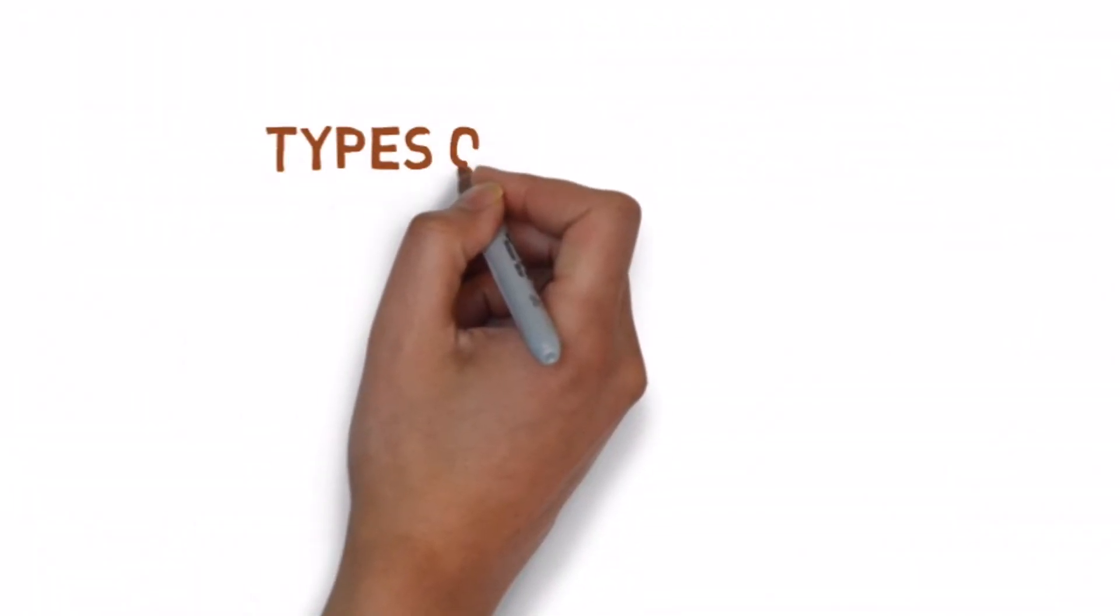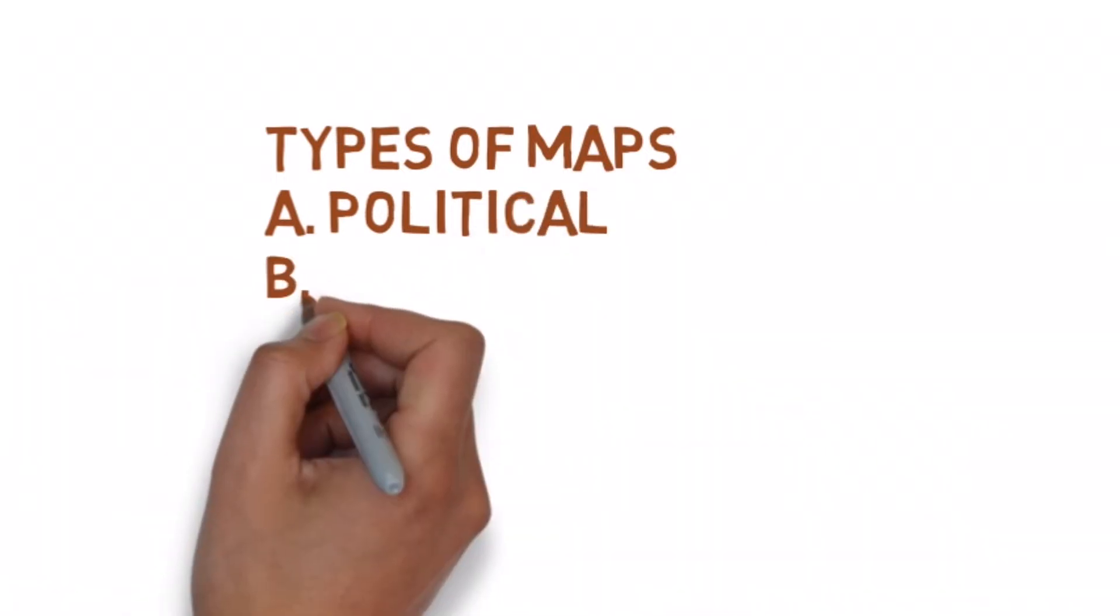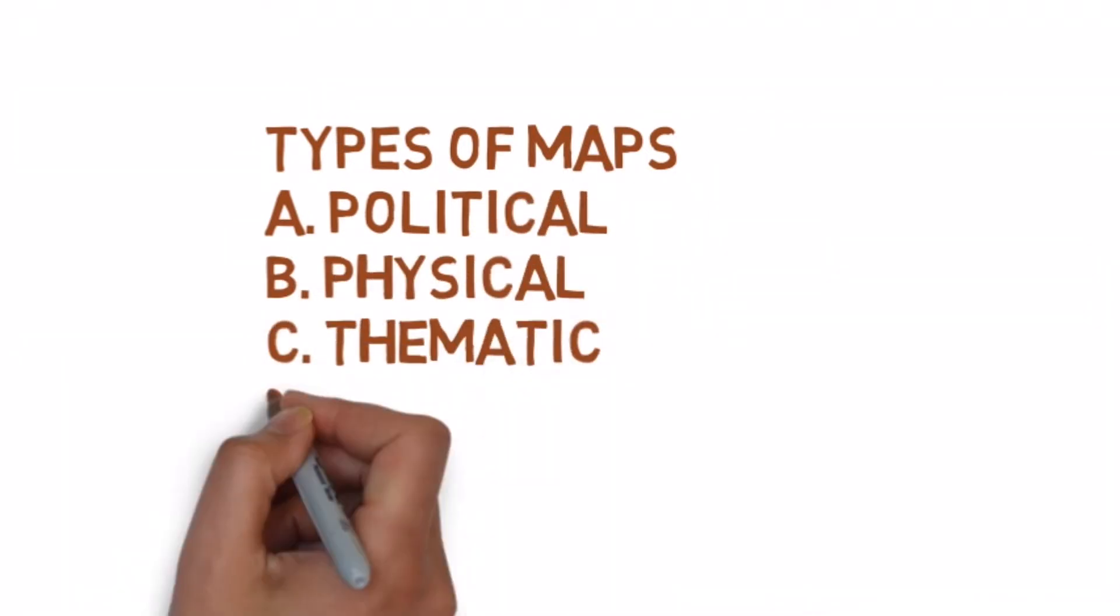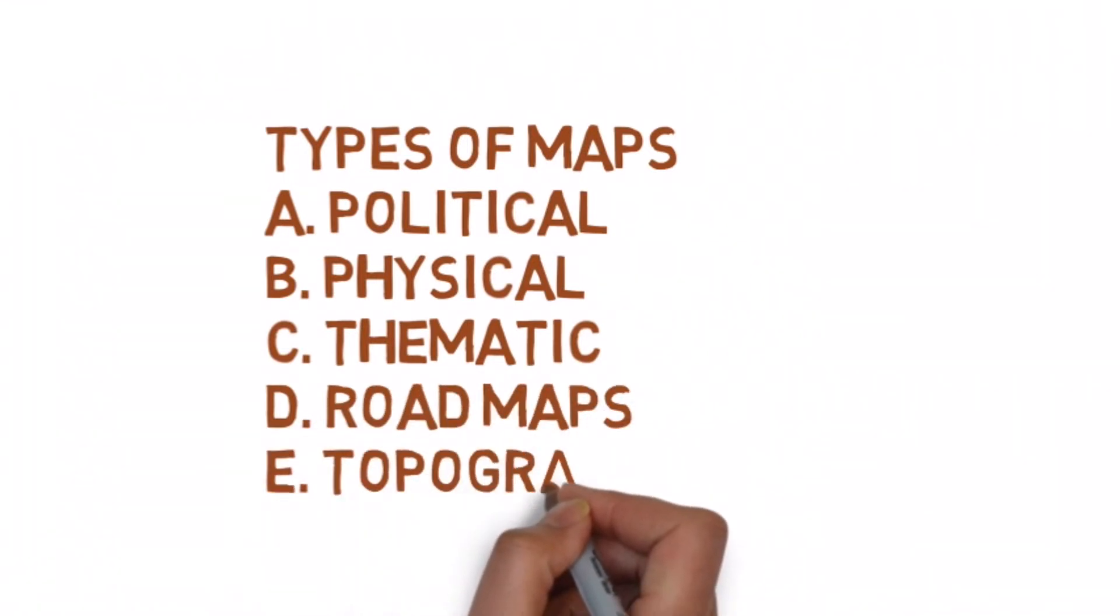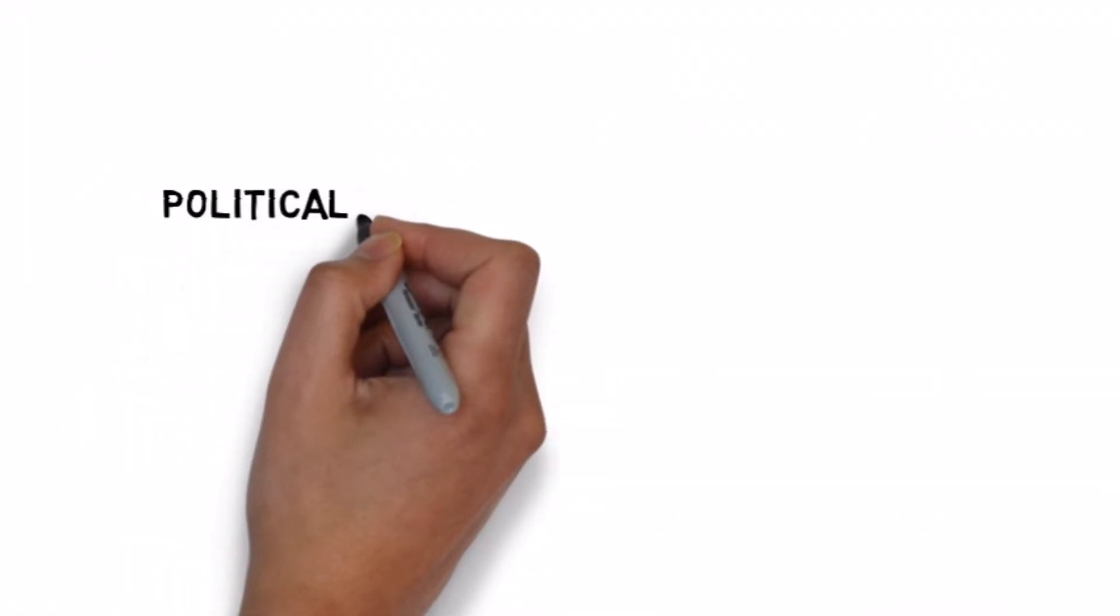Next we come to the types of maps. In today's lesson we are going to learn about the five types of maps: number one, political; number two, physical; number three, thematic; number four, road maps; and number five, topographic maps. Let us learn about each one of them a little in detail. Political maps are those that show countries, their capitals, states, cities, the national boundaries as well as state boundaries.